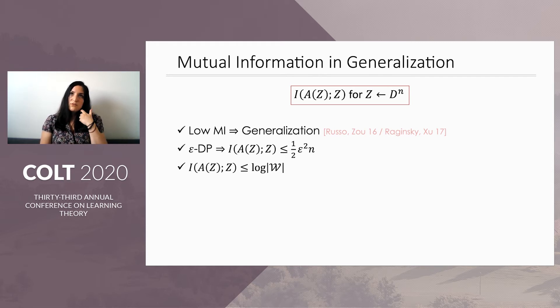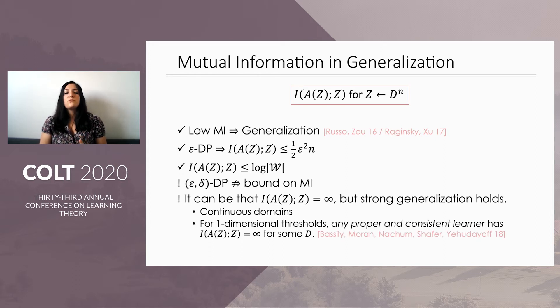Now what does the mutual information not do? First of all, we can't get a bound on the mutual information from approximate differential privacy, or epsilon-delta differential privacy, which is arguably the more practical variant of differential privacy. And also, the mutual information is not compatible with uniform convergence. In particular, the mutual information can be unbounded when strong generalization holds. This intuitively comes from the fact that on a continuous domain, a single point could have infinite information content.